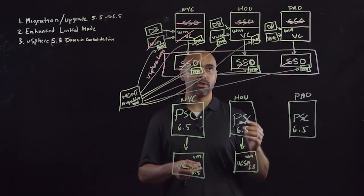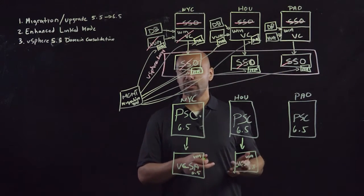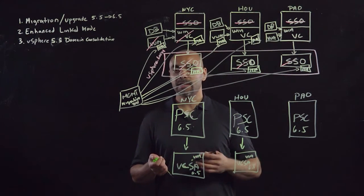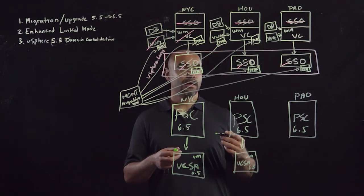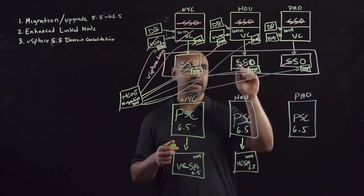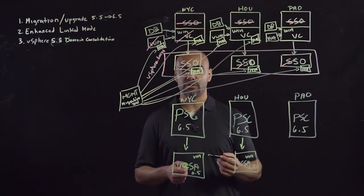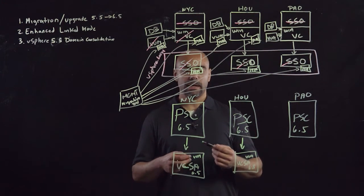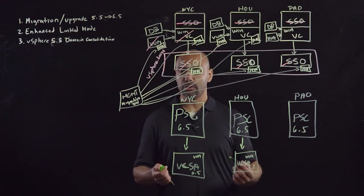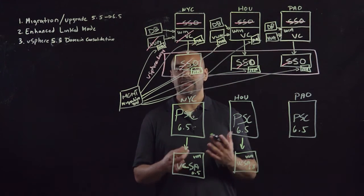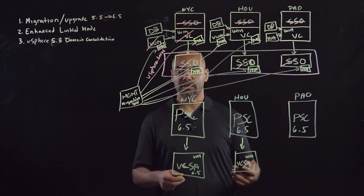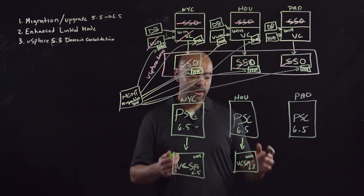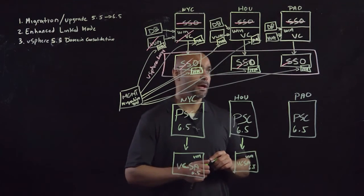You have this option of bringing over historical and performance data, but keep in mind that this will increase migration time. But again, we're bringing over also the identity of the source Windows vCenter server to the appliance, which means we're bringing over FQDN, IP address, certificates, UUID, which is huge because as far as any other solution is concerned, it's the same old vCenter server. Nothing's changed with the added benefit of now VUM being part of the appliance, no longer requiring that separate Windows server.